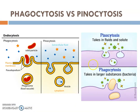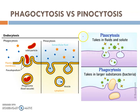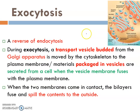Now you can differentiate between phagocytosis and pinocytosis using the points we have learned. Please get at least two points of comparison. Now we go to the second type of large molecule transport, which is exocytosis.